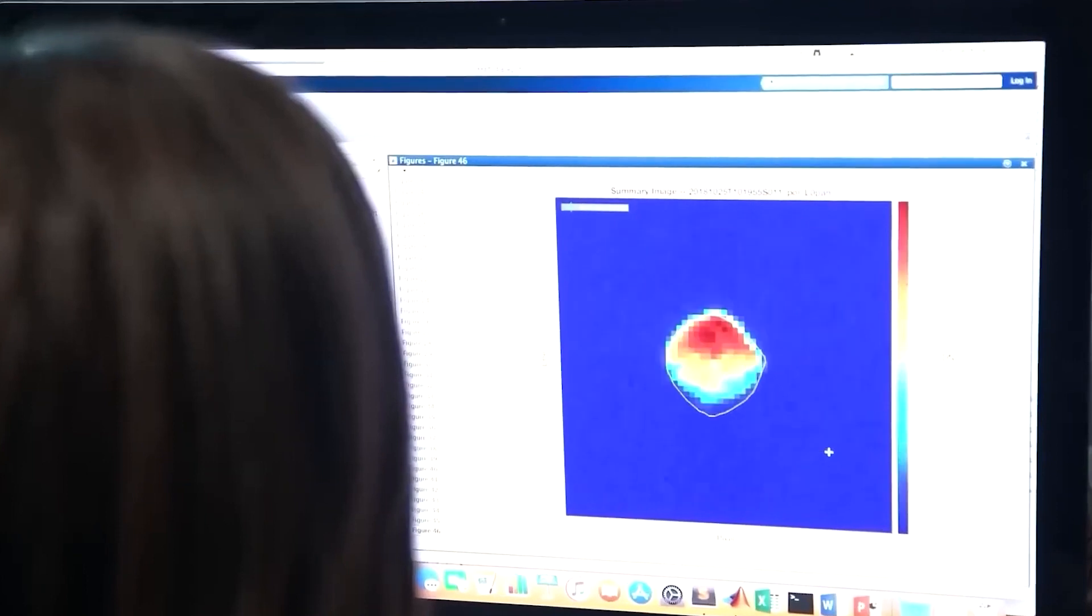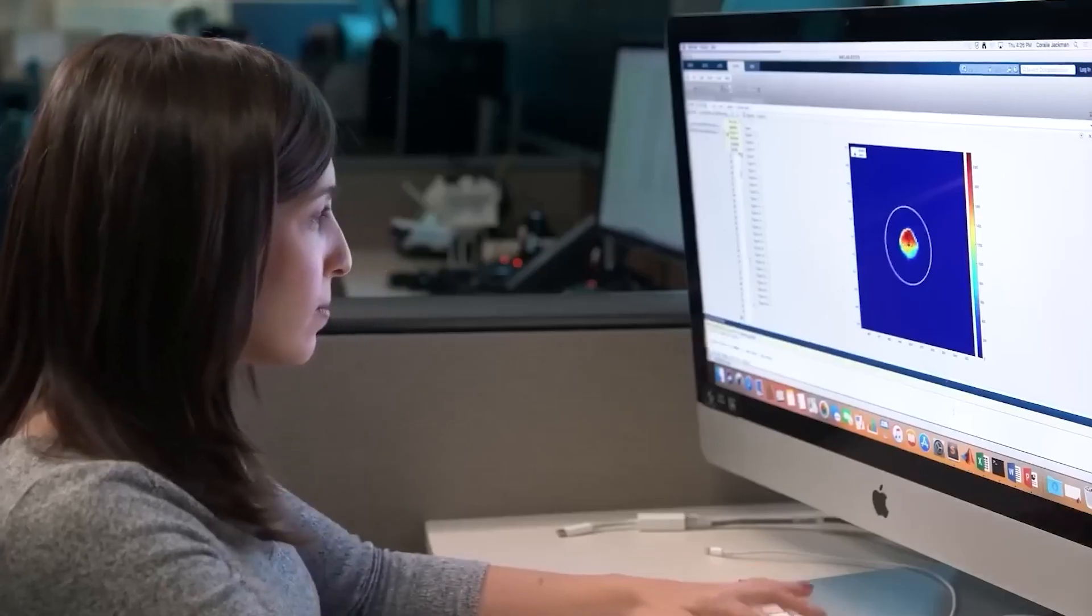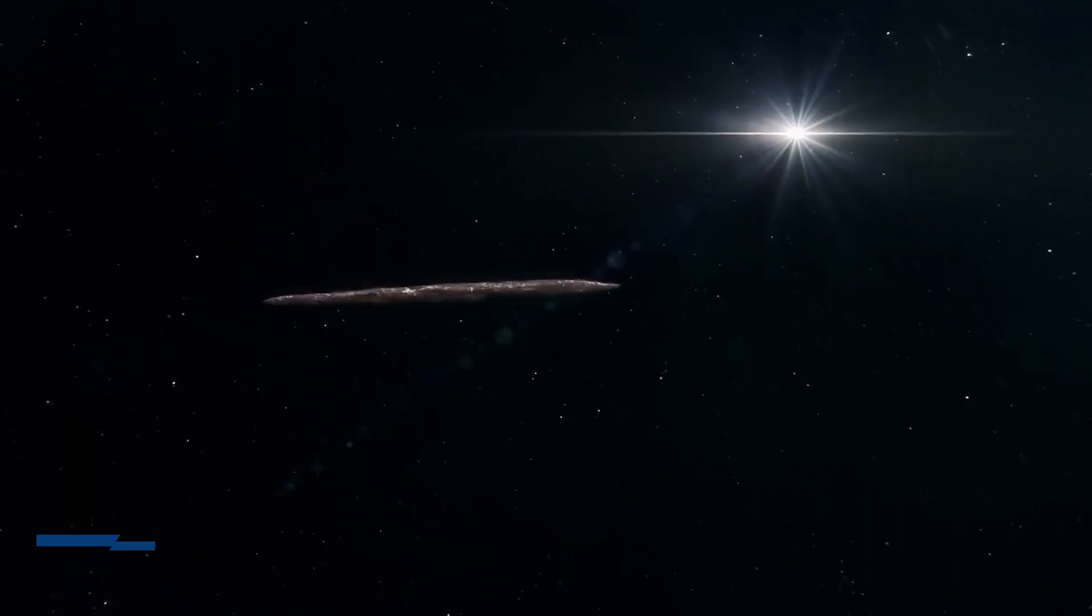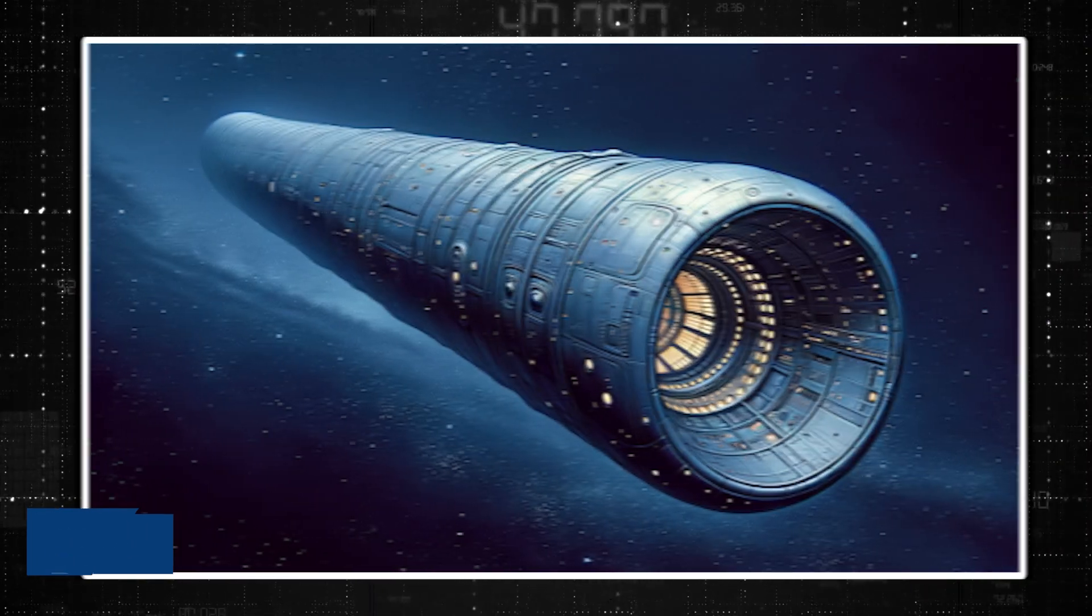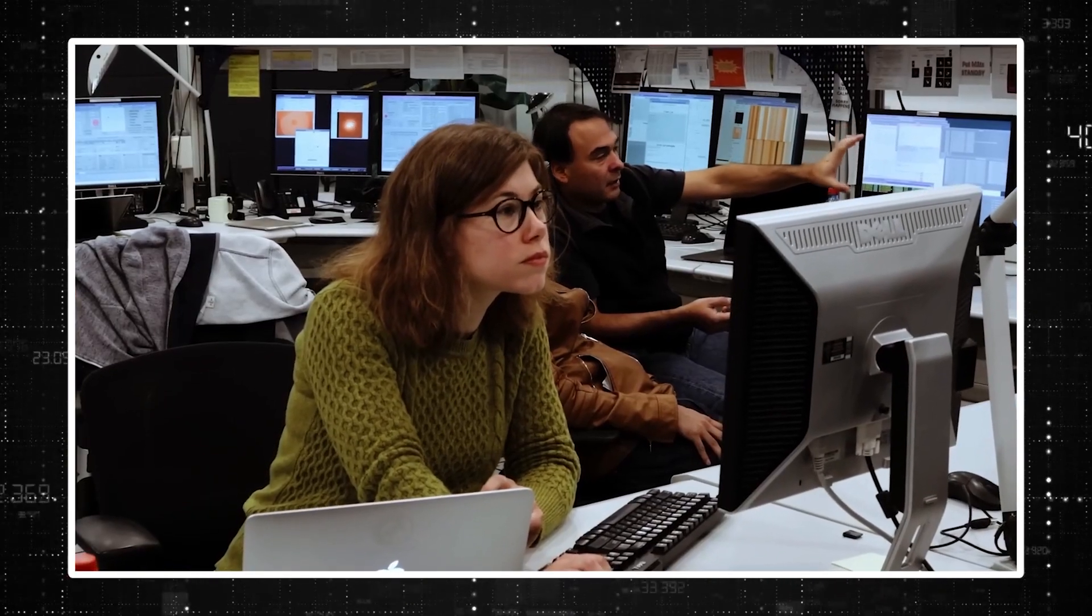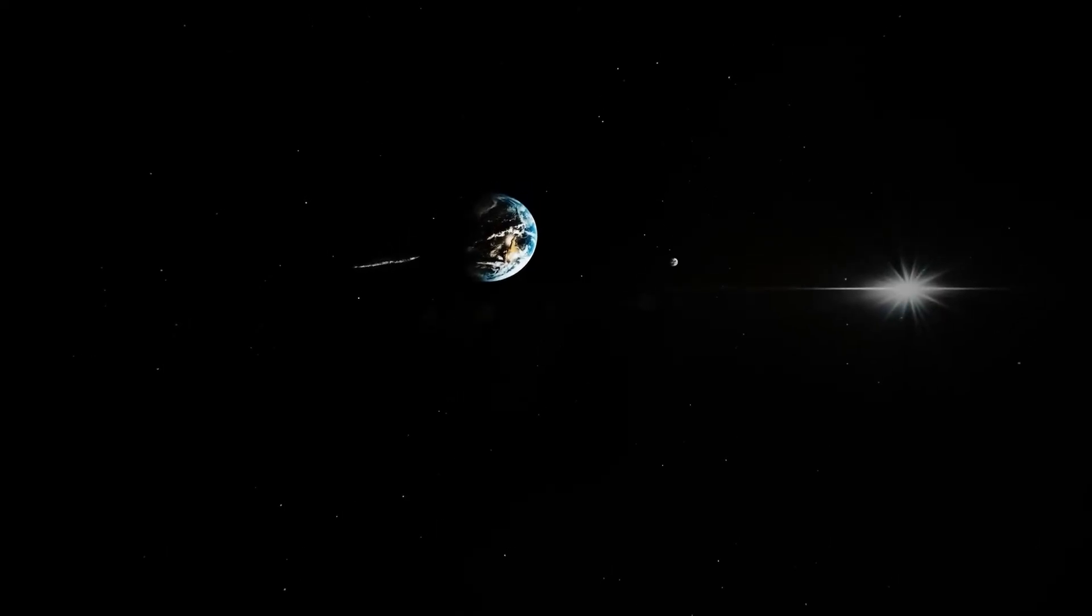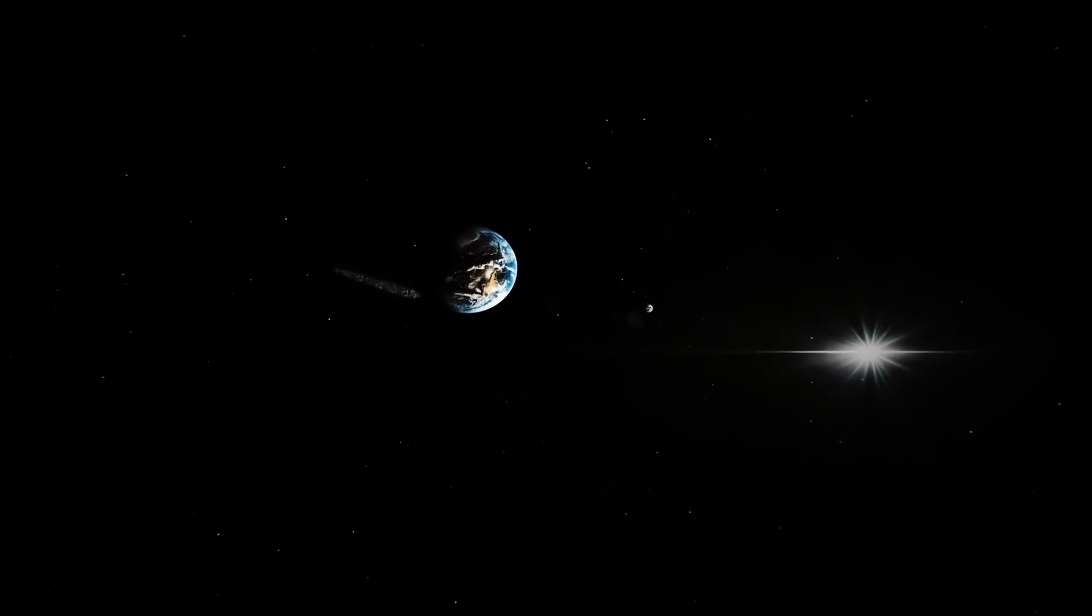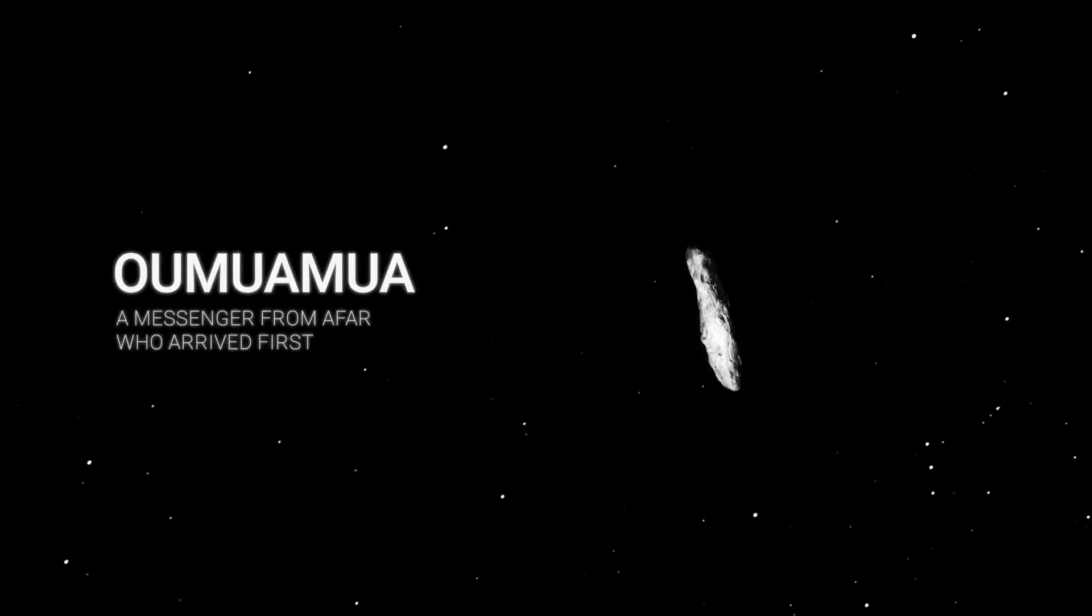Any discovery as significant as this deserves a name, so for a brief time, astronomers called it Rama after the cylindrical spacecraft from Arthur C. Clarke's renowned science fiction novel, Rendezvous with Rama. Later on, a Hawaiian navigator and a Hawaiian linguist were consulted for a much more unique name. Here, this mysterious object finally got its famous name, Oumuamua, meaning a messenger from afar arriving first in Hawaiian.